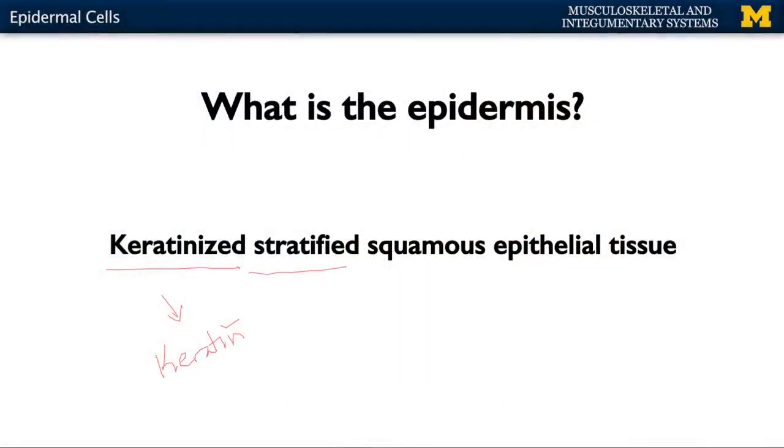Stratified — any time you see that word in anatomy or histology — just means more than one layer. So depending on whether you're talking about thick or thin skin, it could be four or five layers.